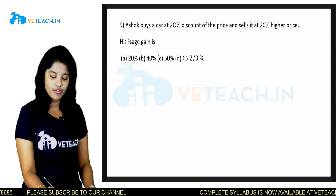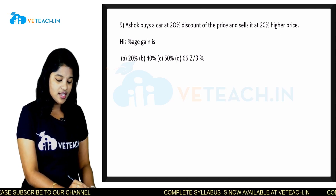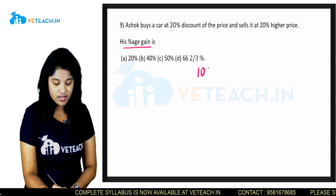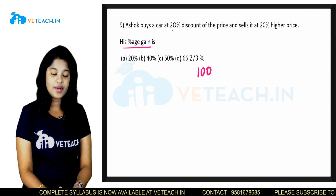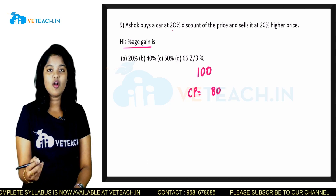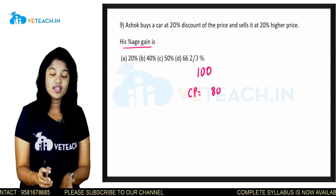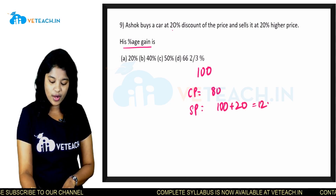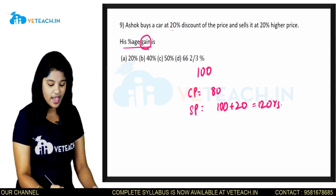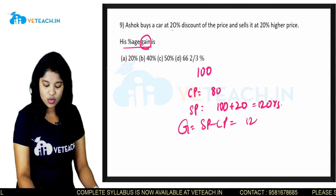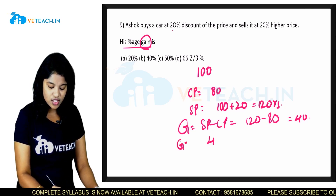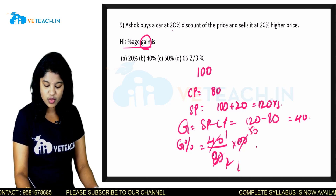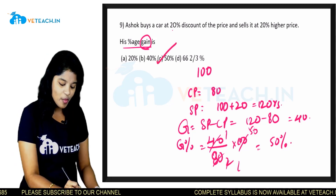Ashok buys a car at 20% discount and sells it at 20% higher price. His percentage gain is — let the price initially be 100 rupees. He got it at 20% discount, so he bought it for 80 rupees. He sold the car at 20% higher price, so 100 + 20 = 120 rupees. Gain = SP − CP = 120 − 80 = 40. Gain percentage = 40/80 × 100 = 50%. Option C is our correct answer.